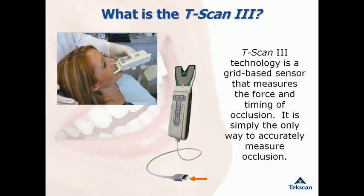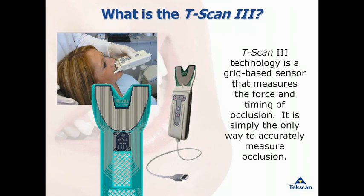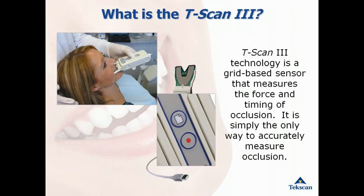The handle connects into the USB port of your PC and is easy to move from one operatory to another. The sensor, designed to fit the shape of the dental arch, inserts into the sensor handle. The T-Scan handle has two buttons that function on the panel: the first button brings up a new recording window, and the second red dot button will start and stop the recording mode. You can record a patient going into maximum intercuspation, being manipulated into centric relation, or performing excursive and protrusive movements.